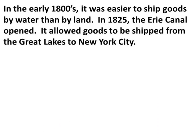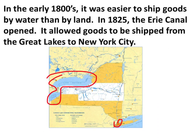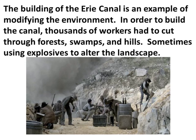In the early 1800s, it was easier to ship goods by water than by land. In 1825, the Erie Canal opened, allowing goods to be shipped from the Great Lakes to New York City. Here's New York City, and by canal you can ship goods all the way up to the Great Lakes. The building of the Erie Canal is an example of modifying the environment — in order to build it, thousands of workers had to cut through forests, swamps, and hills, sometimes using explosives to alter the landscape.